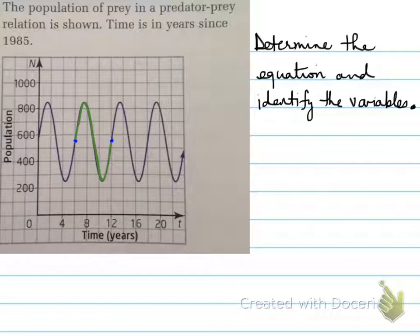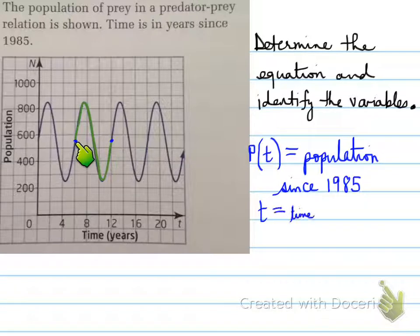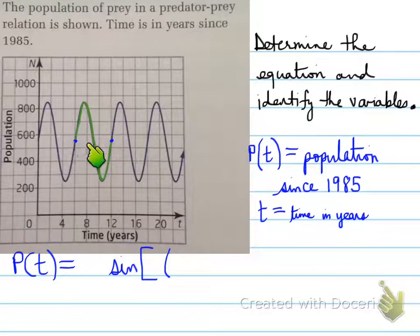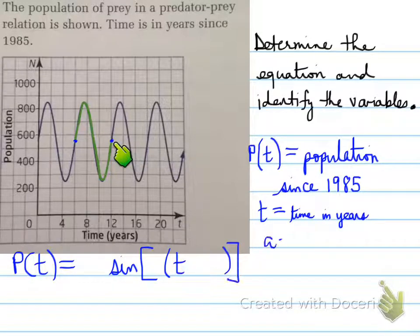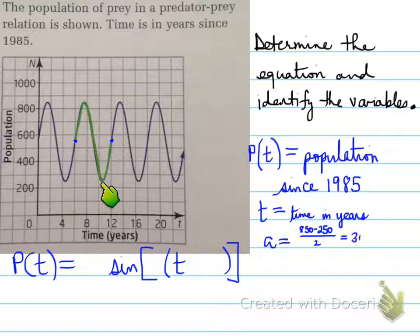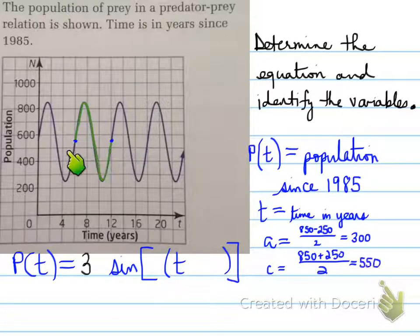So we need to find the equation of this graph. First thing we should do is trace a cycle. Here's a cycle, a really nice one, where we do the middle, starting here, going to the top, coming back to the middle again. How do we know that's the middle? Maximum minus the minimum divided by 2, and the middle will be here at 550. So P(t) is the population of the prey since 1985, and t is the time in years since 1985. The equation is going to be a sine curve because this is the trace that we did. Our amplitude is 850 minus 250 divided by 2, which gives us 300. The C value is 850 plus 250 divided by 2, which is 550.